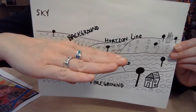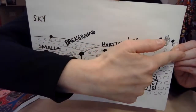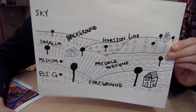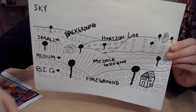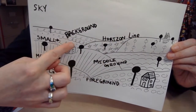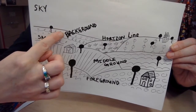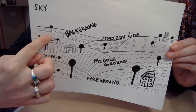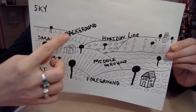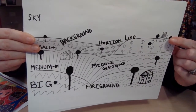The horizon line could be bumpy, it could be straight — it's up to you, but it goes from one side of the paper to the other. Your landscape will have the background, where stuff is super small. Your trees back there are going to be small, and your houses would be super small too.